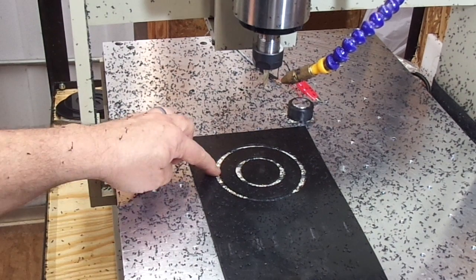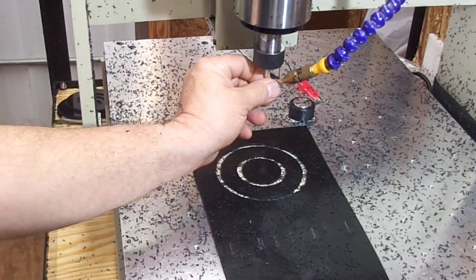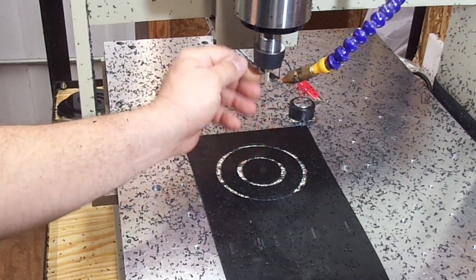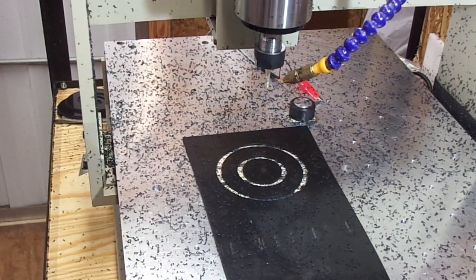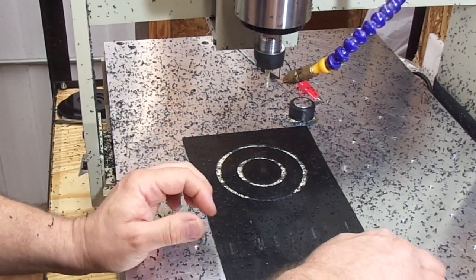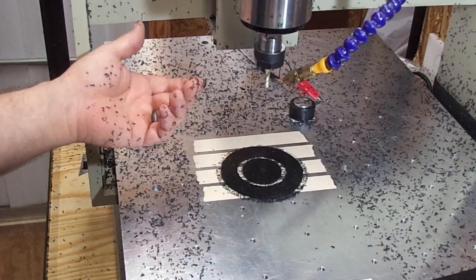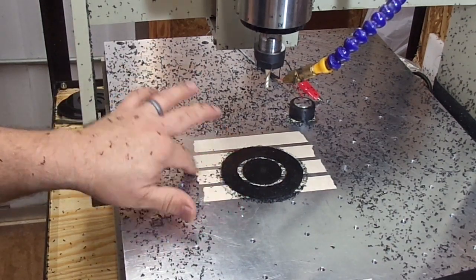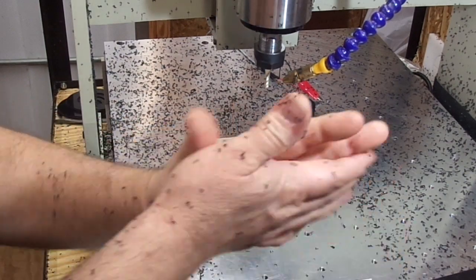Alright, I'm pretty sure that I could actually cut a little more aggressive than that. That was cutting 40 thousandths at a time down. I bet I could almost cut that in one pass. I don't know how aggressive it would be with the one flute, but it cut perfect. It barely cut into the double stick tape.